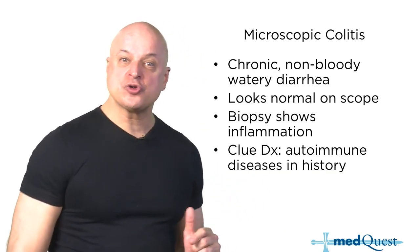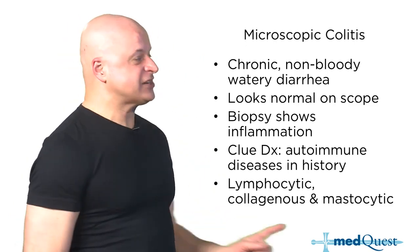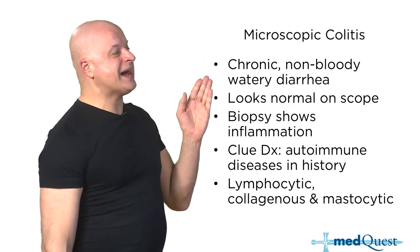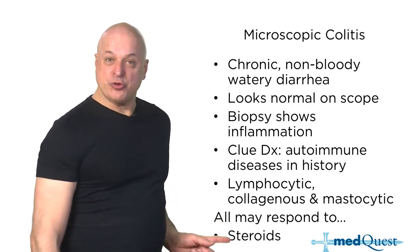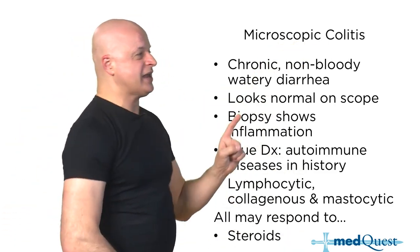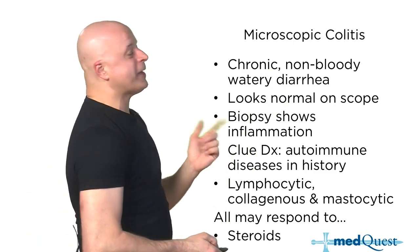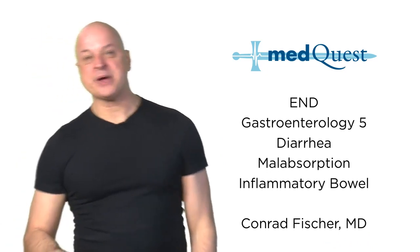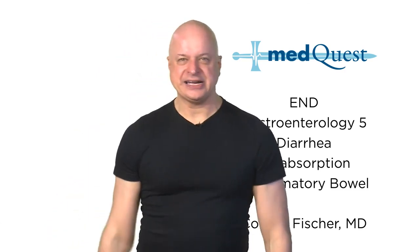Microscopic colitis means you have signs of colitis and chronic watery diarrhea, but when you scope someone the colon looks normal — it's microscopic. Only the biopsy shows inflammation — lymphocytes, mastocytes, or collagenous changes. It's an autoimmune disease, and you treat it with steroids.